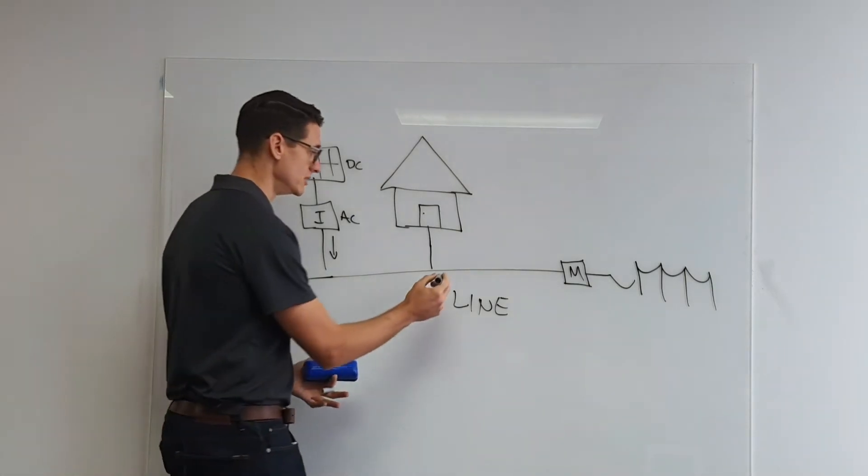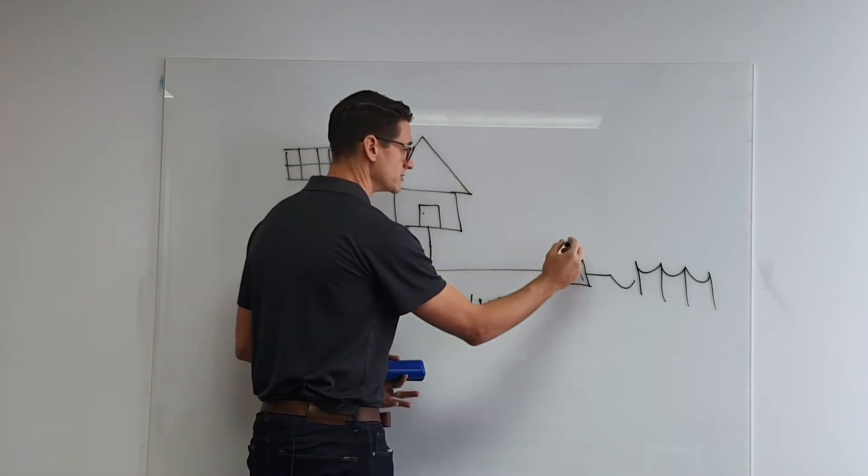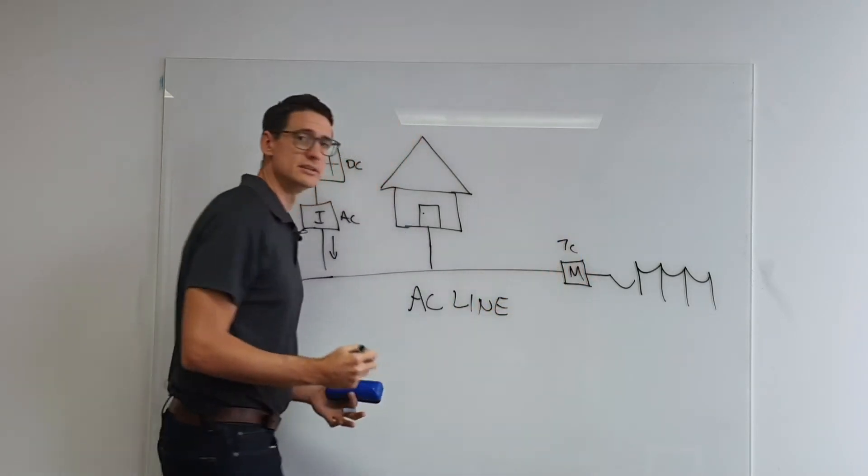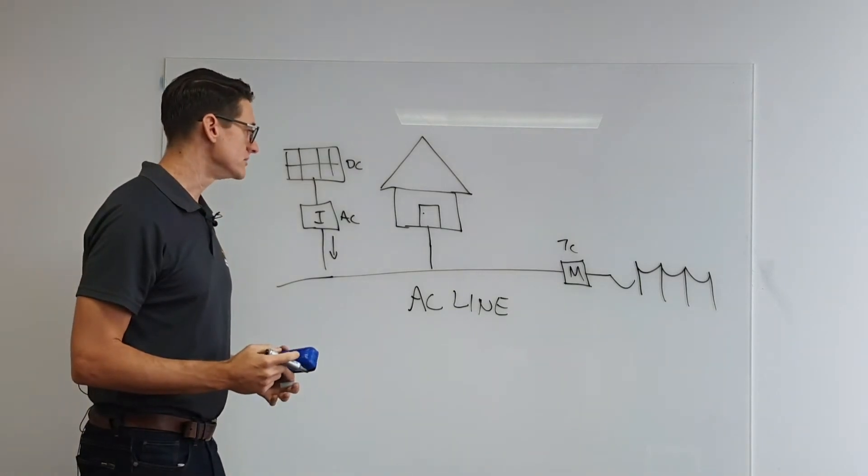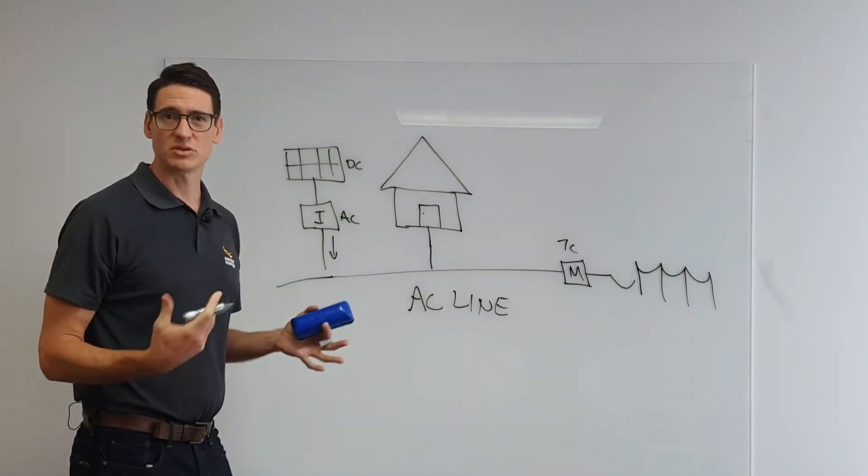Any spare power then trickles out to the grid, and that's when you get paid your seven cent feed-in tariff. So that's in broad terms the way it's connected.